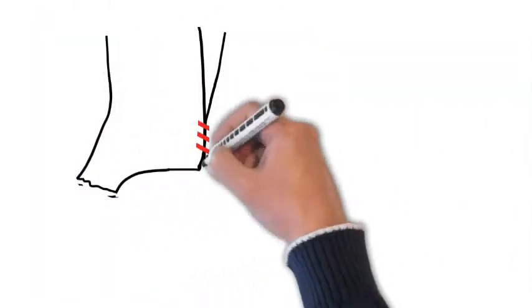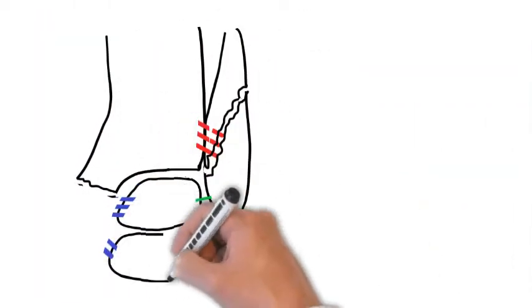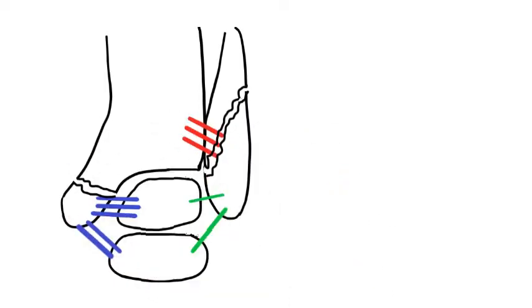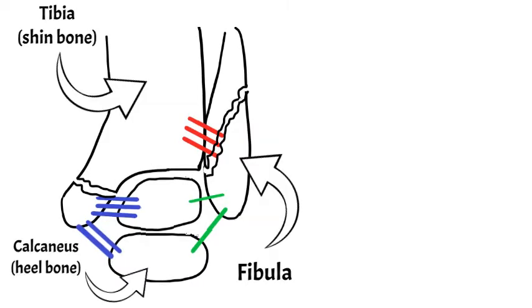That's what it looks like in a real person where those bones would sit. We're going to mark out this diagram again so we can go through the main three areas where you'll commonly break your ankle — marking the tibia, the fibula, the heel bone, and the talus.